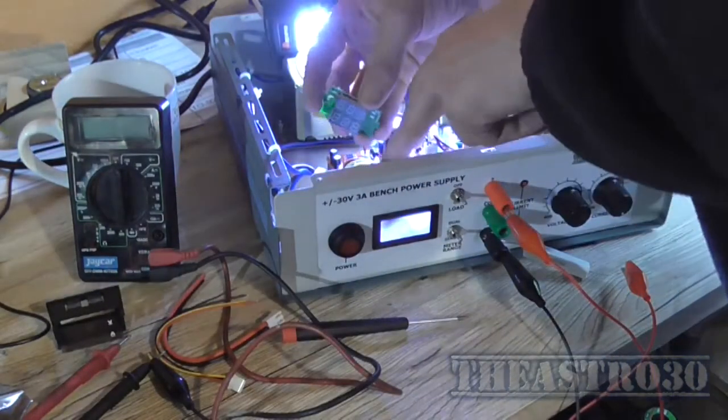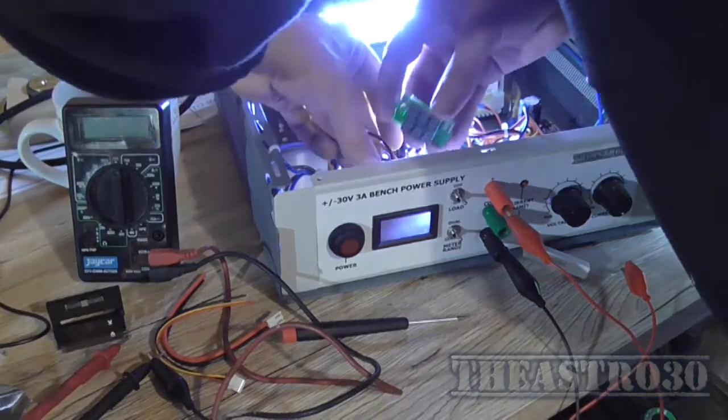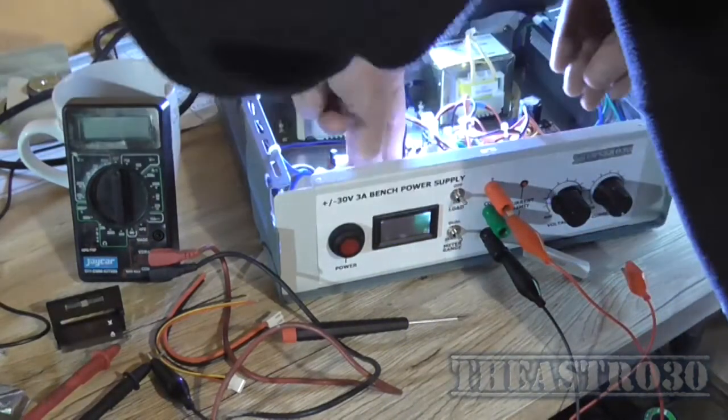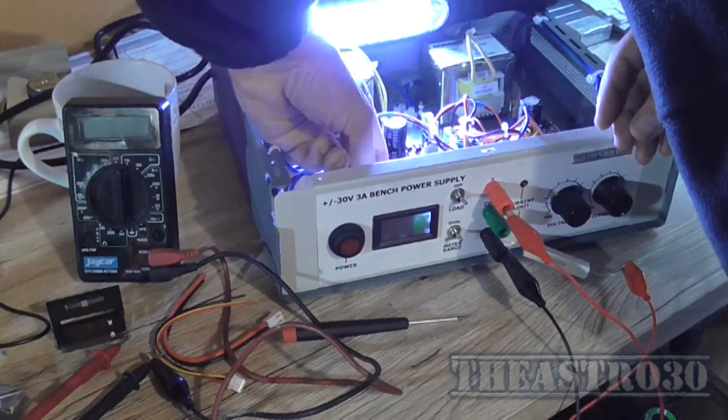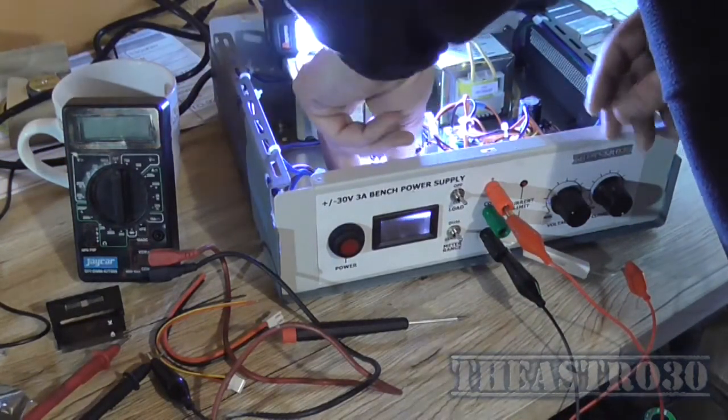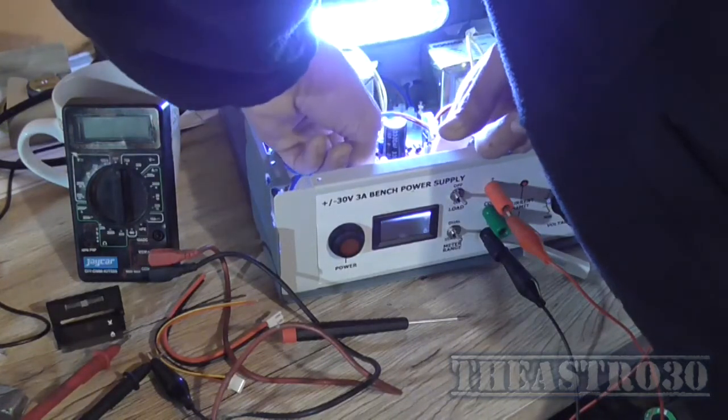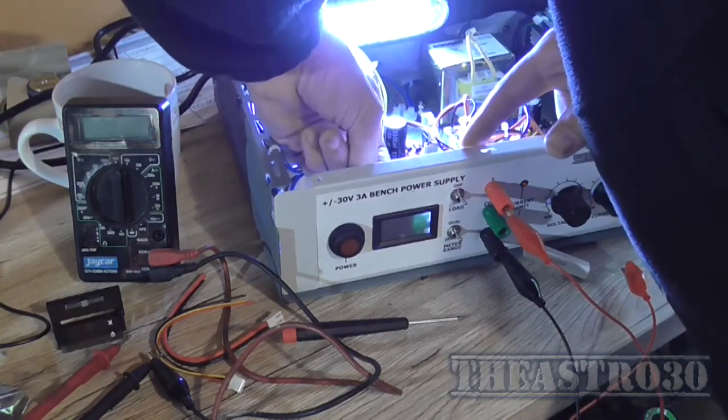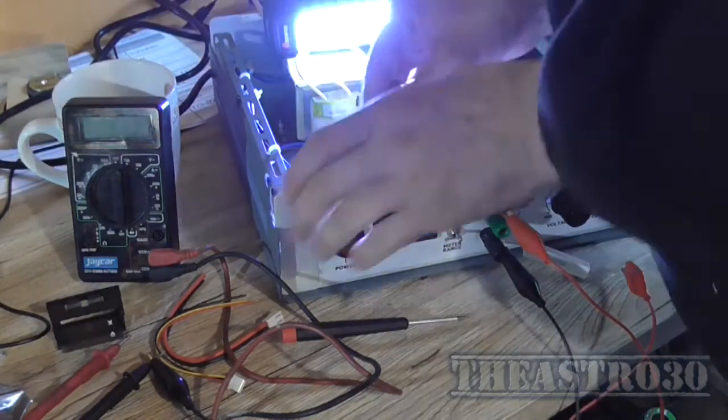And it's just the reverse putting it in of how I took it out. So I can get it started in the first tab. See if it's nice and square and all. If I can get it to start, it'd be good. There we go. So there's that edge in.